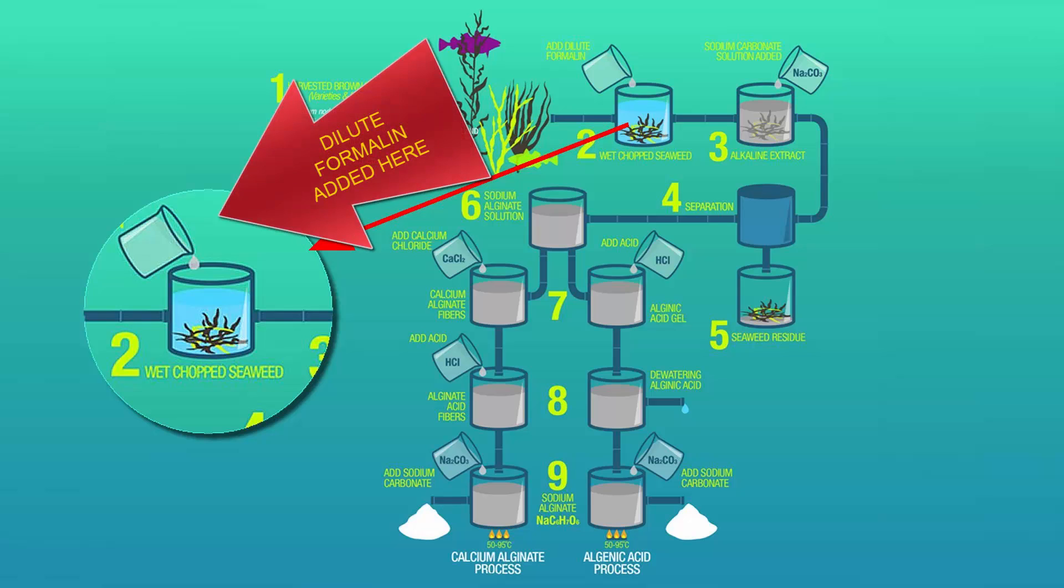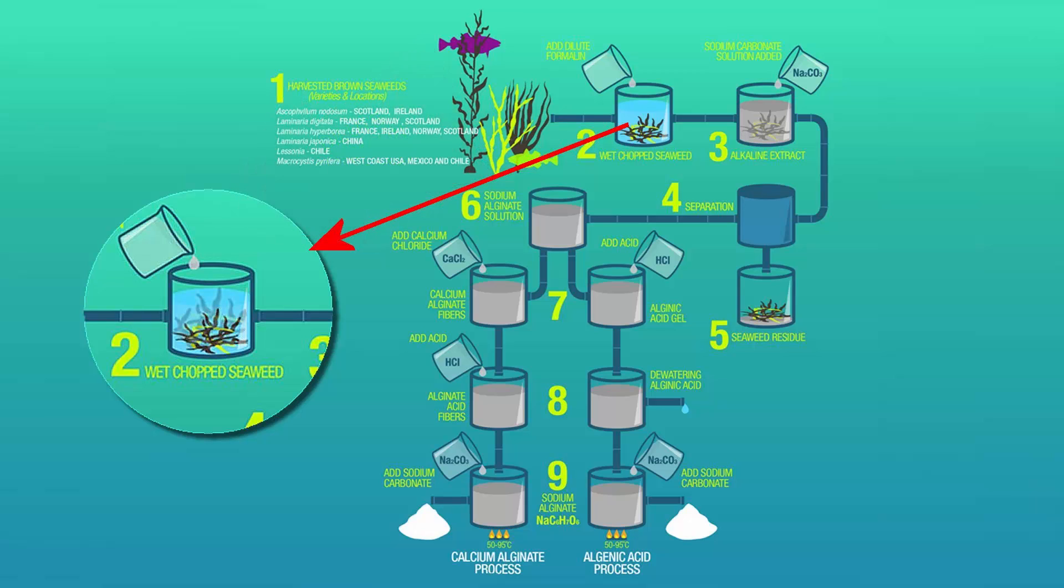Dilute formalin is added to each batch of chopped seaweed. This is a solution of formaldehyde containing a small amount of methanol. This chemical causes the seaweed to swell up.